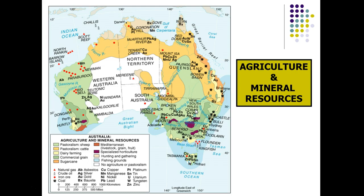You can see the more specialized agriculture found in Australia. They are known for their wines and have a famous Mediterranean climate. Notice its southwest position on the continental landmass — Mediterranean climates are always found on the west coast of continents. We can also see an abundance of mineral resources, many important for modern high-tech economic activity, with lots of mining activity throughout Australia.